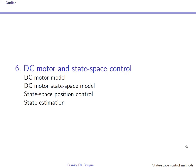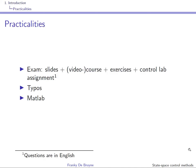Section 6 will not be covered in this video course. It implements the theory on a DC motor, and all theoretical concepts are covered on this practical example in full detail. You should use this section as a guideline when working on the state space control lab assignment. The exam will cover the slides, everything said during the course and/or the video course, all the exercises, and everything done during the control lab assignment.